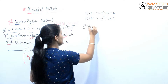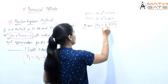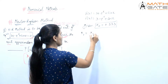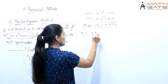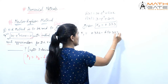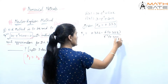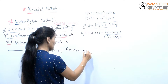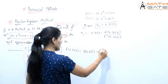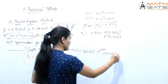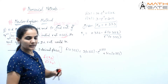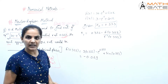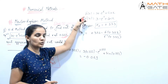The initial root given is x0 = 0.333. We need to find x1. So x1 = 0.333 minus f(0.333) divided by f'(0.333). To find f(0.333), we substitute: 3 × 0.333 minus e to the power 0.333 plus sin(0.333). After solving this, the value comes out to be minus 0.069.